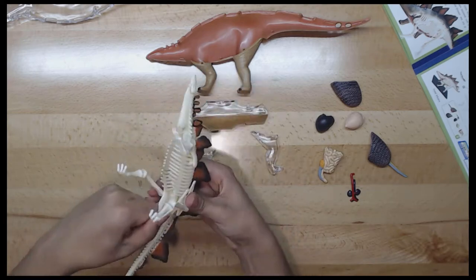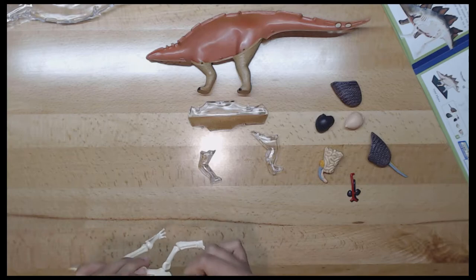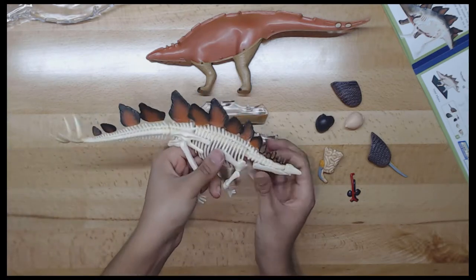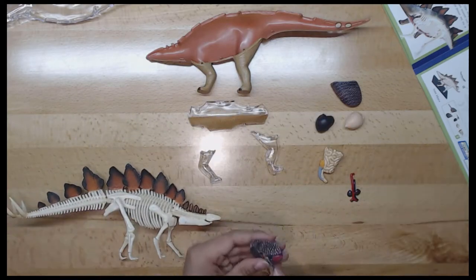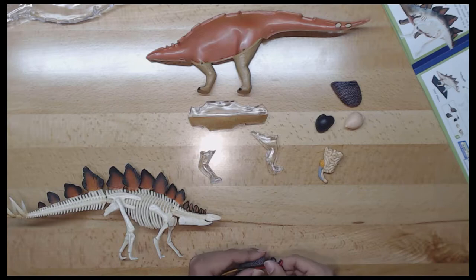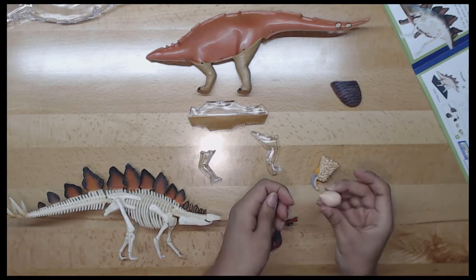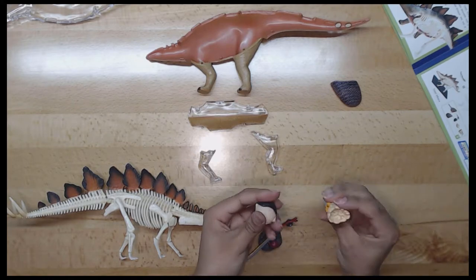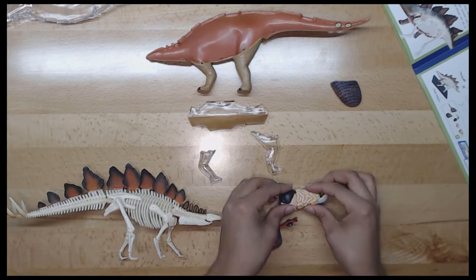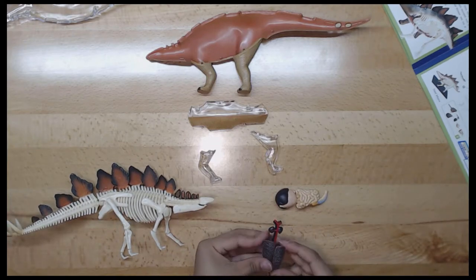The next and last part is the tail. Stegosaurus had two pairs of long spikes extending near to the end of the tail. Different species of Stegosaurus had different numbers of tail spikes. Stegosaurus ungulatus had eight spikes, and Stegosaurus stenops had four spikes. These tail spikes were up to 1.2 meters long and were used for protection from predators. The tail was also for balancing its body while running.